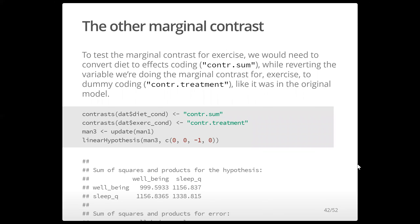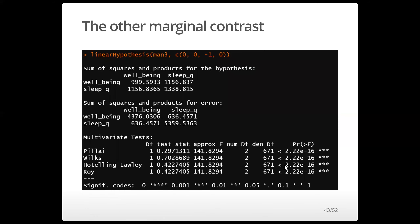To do the other marginal contrast — exercise at the average level of diet — I switch the diet contrast to 'contr.sum' and exercise back to treatment coding, then update my model again. I check the linear contrast needed, which is the difference between the two contrasts for exercise, and here's the full result.